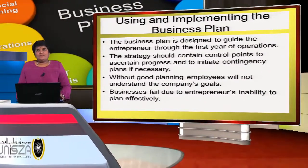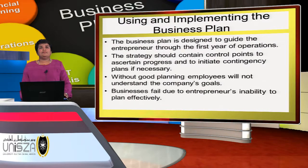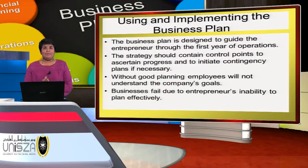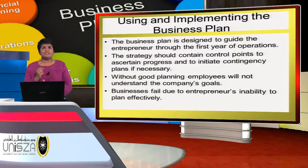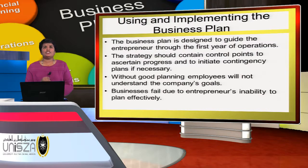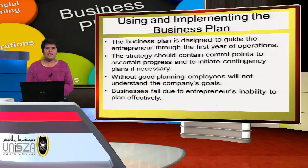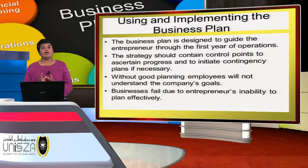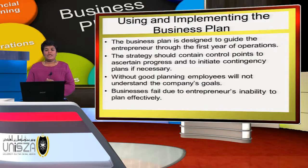Regarding using and implementing the business plan — people may be very good at writing a business plan, but implementation is very, very important and crucial. The business plan is designed to guide the entrepreneur through the first year of operation. The strategy should contain control points to ascertain progress and to initiate contingency plans if necessary. Without good planning, employees will not understand the company's goals. New ventures frequently fail due to entrepreneurs' inability to plan effectively.